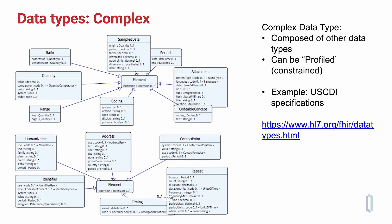There are also complex data types, which are data types composed of other data types. These include such things as human names and postal addresses, as well as the coding of data for code systems, and a fairly often used data type referred to as codable concept, which implies that there are one or more code systems that can represent that data element, or it can be a text string if no code exists.